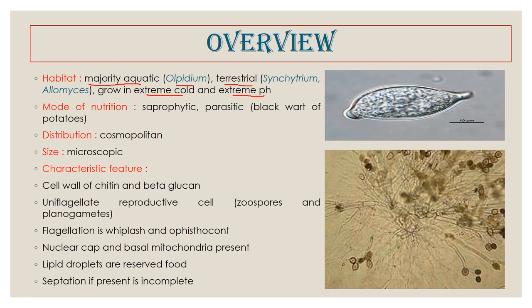The mode of nutrition is of two types: saprophytic, meaning it breaks down complex matter such as lignin and cellulose present in decaying wood, leaf litter, or humus; and some species are also parasitic. They can be parasitic on animals as well as plants. One good example of a parasitic species is Synchytrium endobioticum, which causes blackwart. The class Chytridiomycetes also contains fungi that cause disease in humans as well as other species, for example amphibians and fishes.